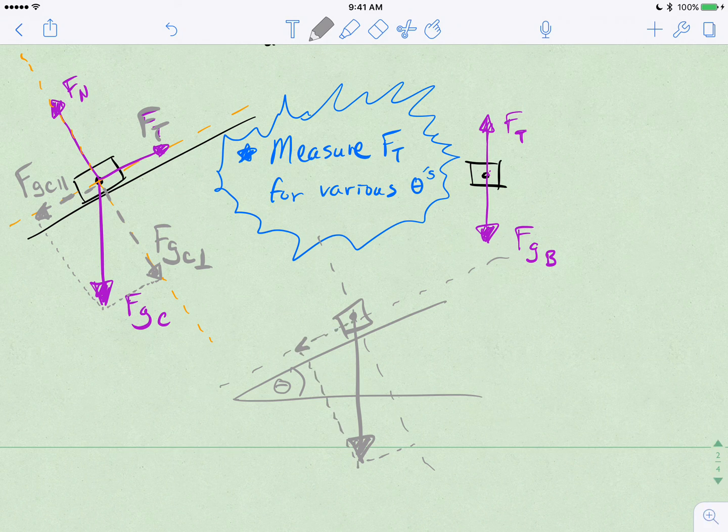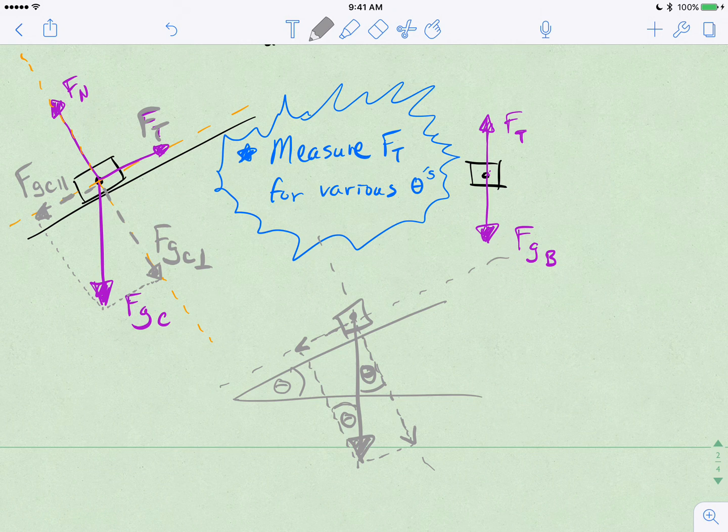And so components of the weight feel like it's pulling the box down the ramp, parallel to the ramp, and into the wood of the ramp, perpendicular to the ramp. The angle right here is actually equal to the angle of the ramp. And because of our friends in geometry, the angle here is also equal to the angle of the ramp. And these make right triangles if you can use your imagination and see that.